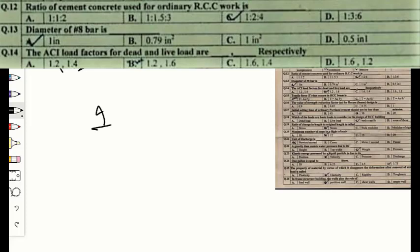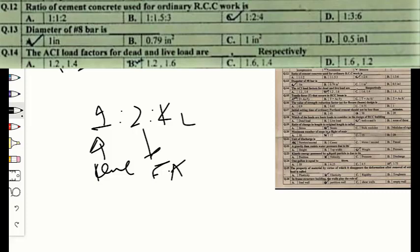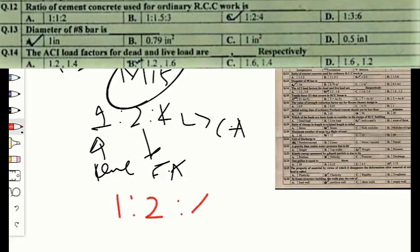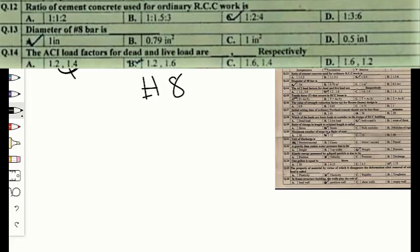Question number twelve: the ratio of cement concrete used for ordinary RCC work is 1:2:4 — one part cement, two parts fine aggregate, and four parts coarse aggregate. This is generally called M15 grade of concrete. The correct option is C — 1:2:4.